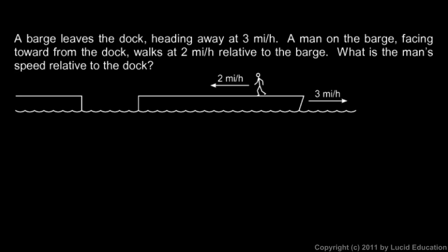Think of it this way: if he were sitting still on the barge, he would be moving relative to the dock at the same speed the barge is moving — 3 miles per hour away from the dock. But now he's walking 2 miles per hour back toward the dock across the top of the barge. That 2 miles per hour to the left cancels out 2 of the 3 miles per hour to the right. So he ends up with a net speed of 1 mile per hour relative to the dock — still moving away, 1 mile per hour to the right.